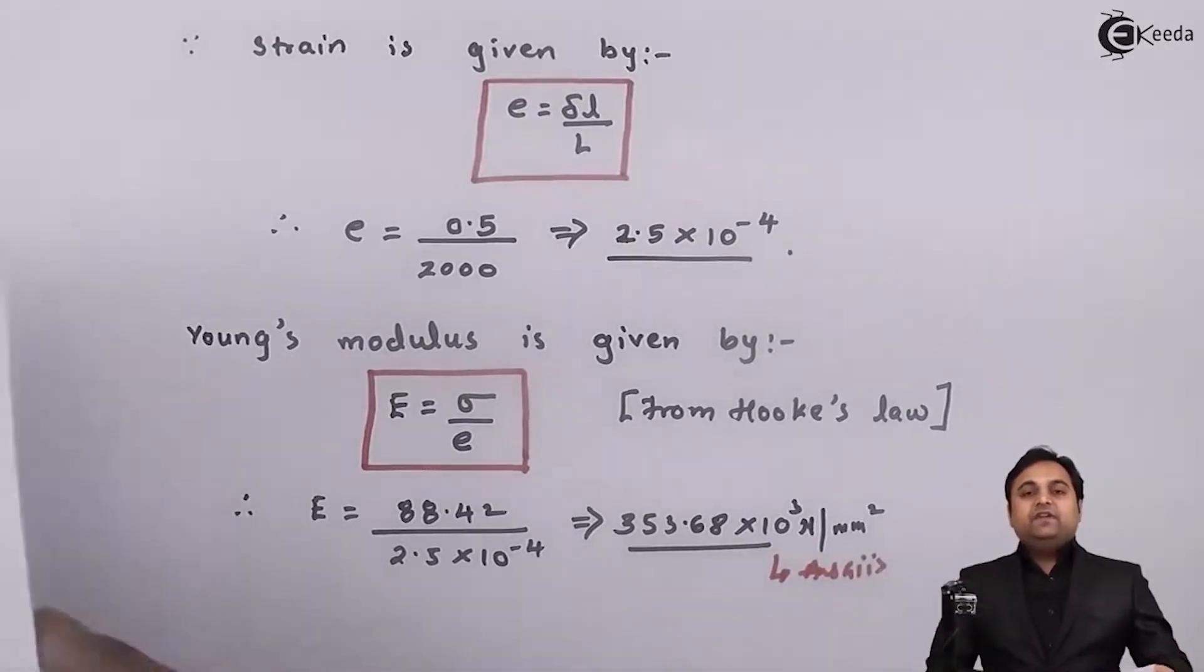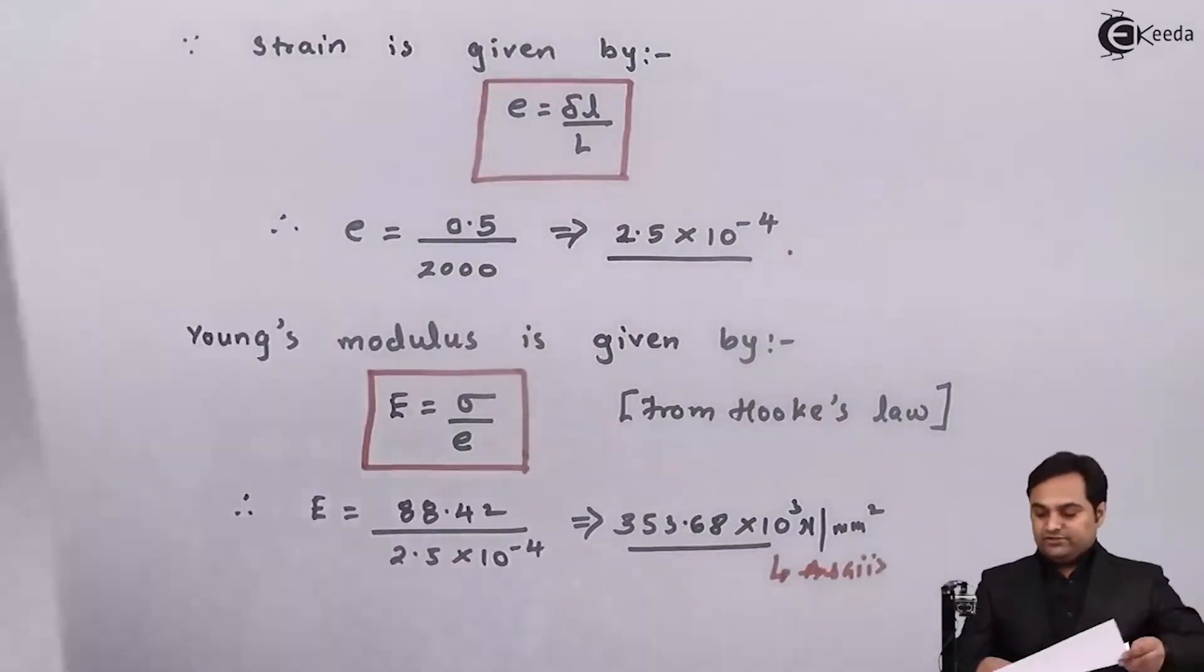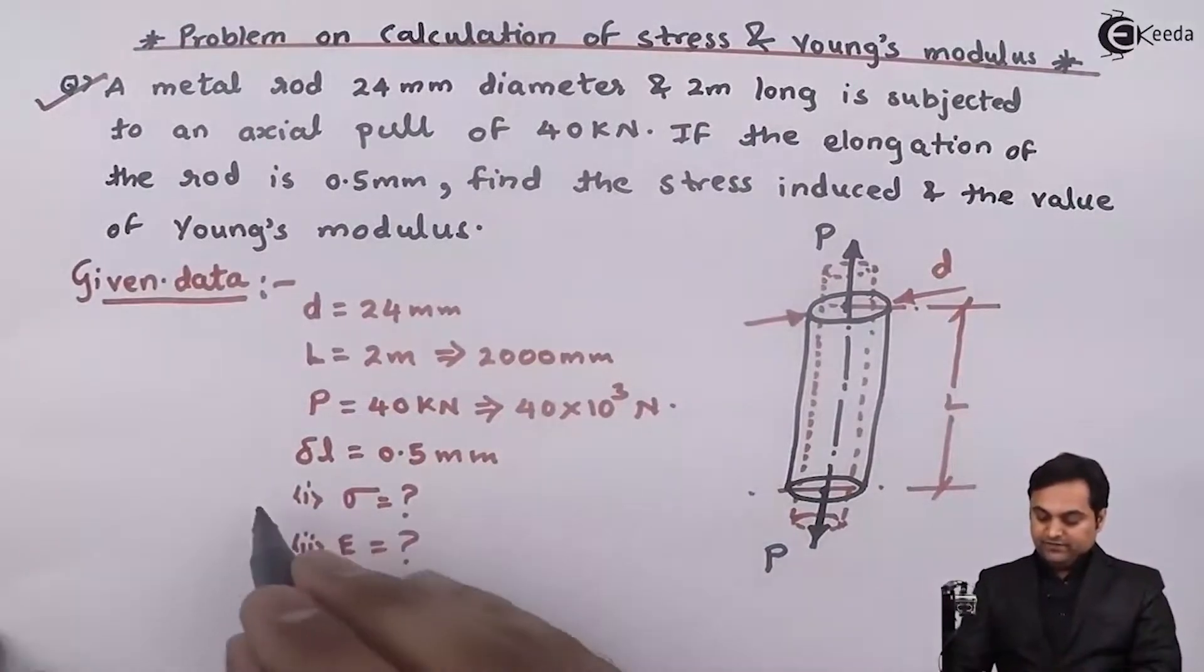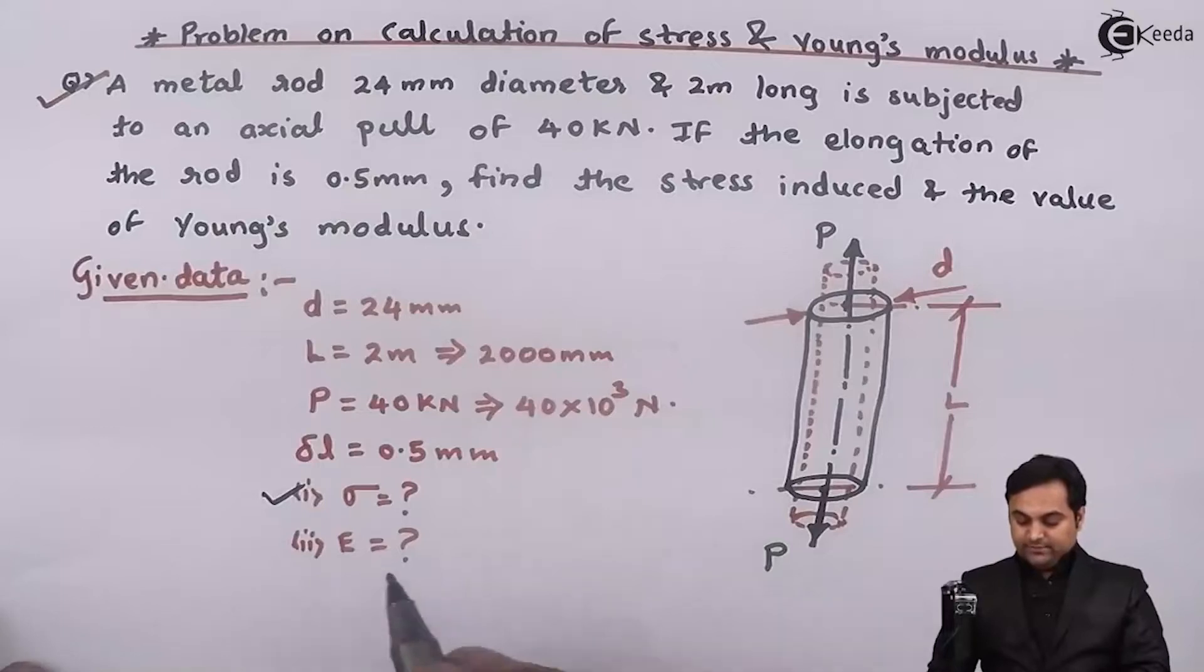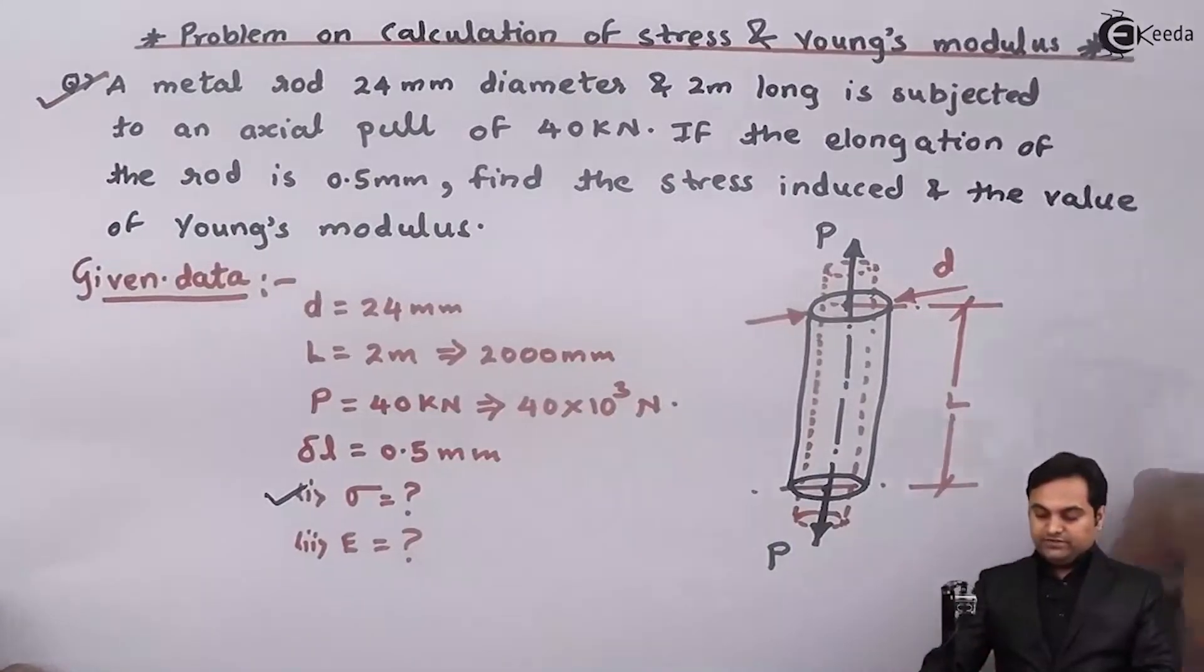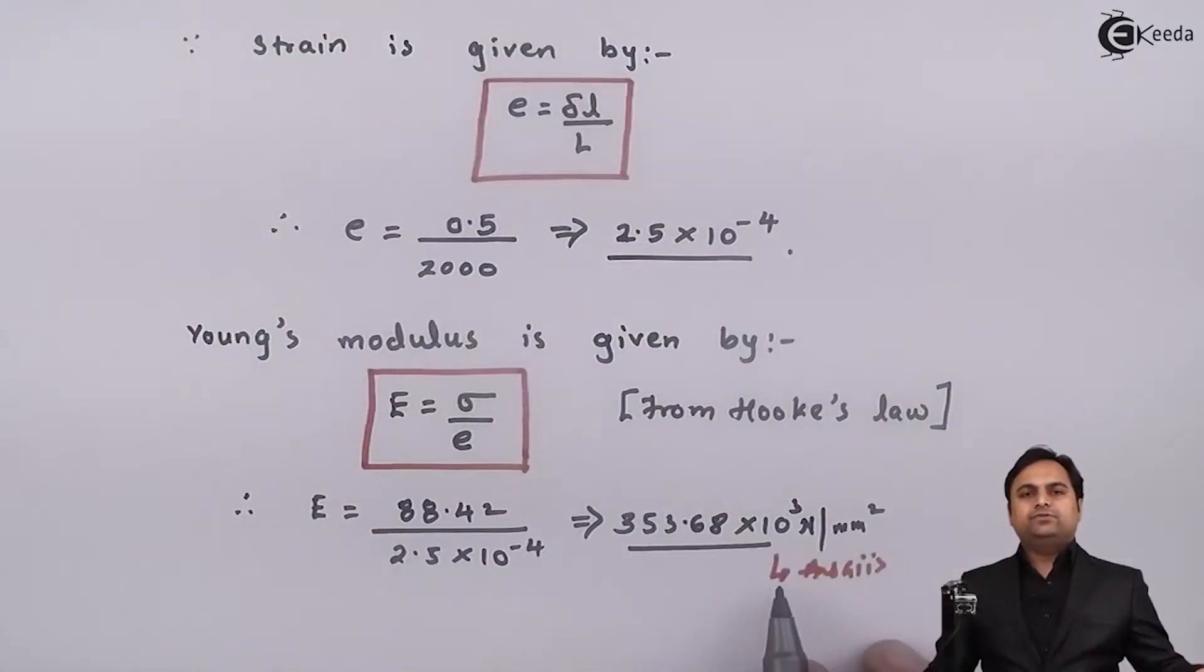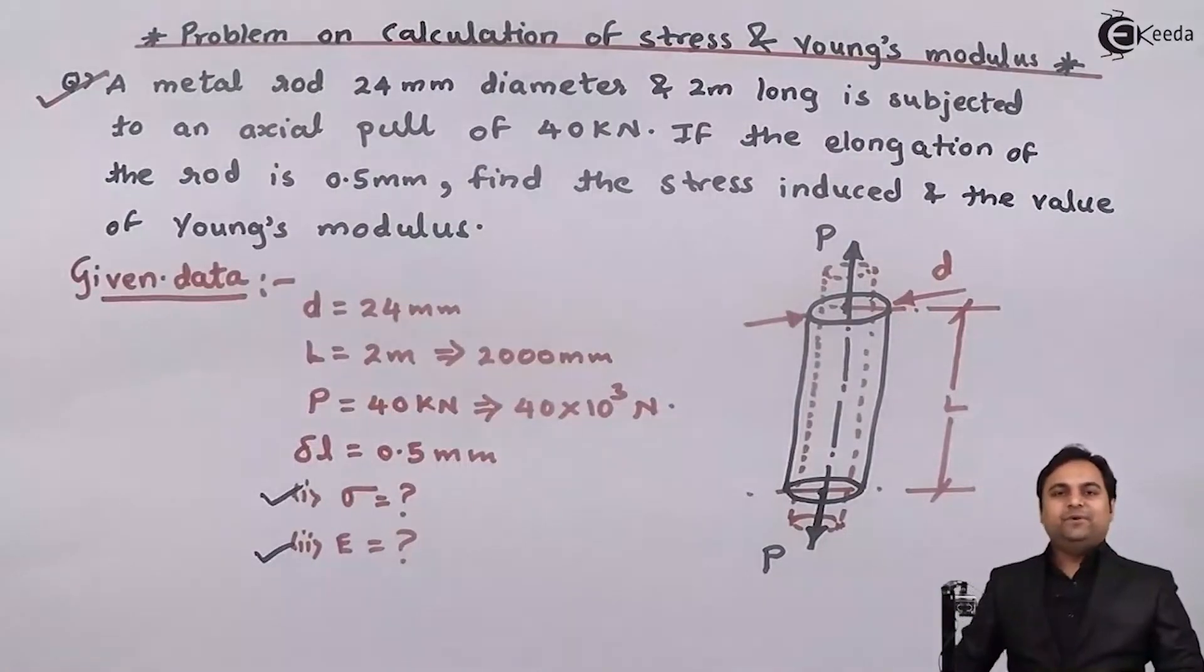So as we have seen in this video there were two questions to solve, first to get the value of stress. That is σ we have calculated 88.42 Newton per mm square. And the second part was to calculate Young's modulus, this we have found out it has 353.68×10³ Newton per mm square. And with this we complete the problem.